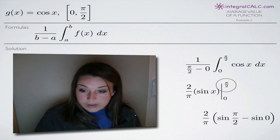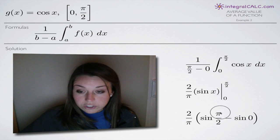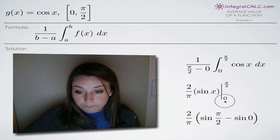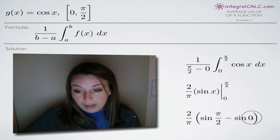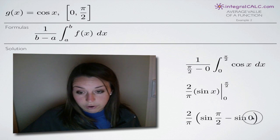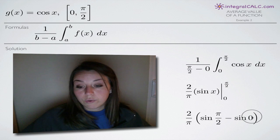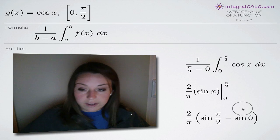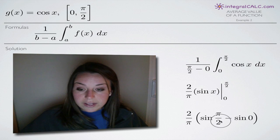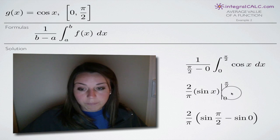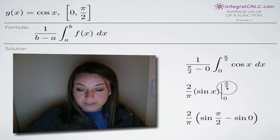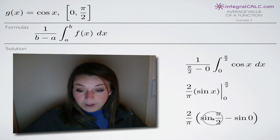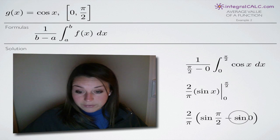When we evaluate on this range, we first plug in pi over two and then subtract and plug in zero for x. If you have trouble with definite integrals, I have that section of videos on my website — you always plug in the top number first, then subtract and plug in the bottom number. So we end up with sine of pi over two minus sine of zero.